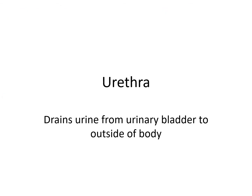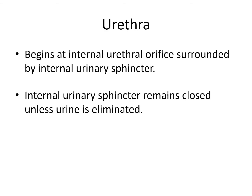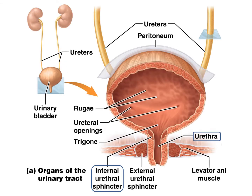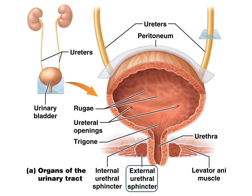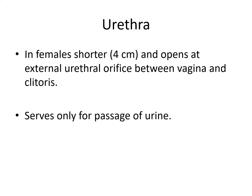The urethra drains urine from the urinary bladder to the outside of the body. It begins at the internal urethral orifice and is controlled by the internal urinary sphincter, which normally remains closed until urine is eliminated. The external urethral sphincter is formed from skeletal muscle and is under voluntary control, giving us conscious control to allow the urine to be released.